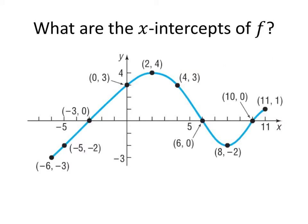So first question is, what are the x-intercepts of our function f? Well, x-intercepts are places where the graph crosses the x-axis. And in this case, we see 3 of those. So we've got 1, 2, and 3.